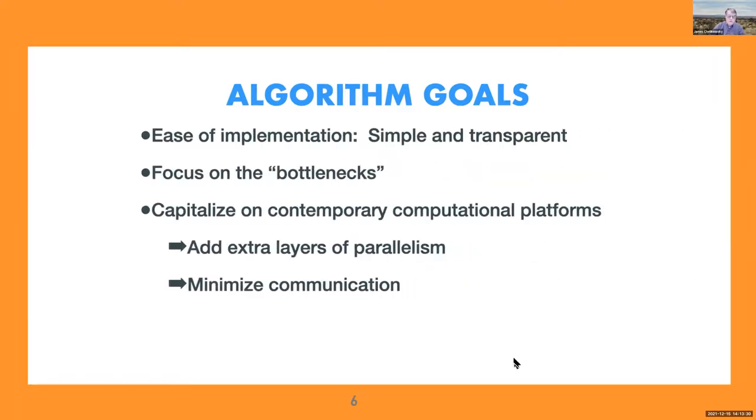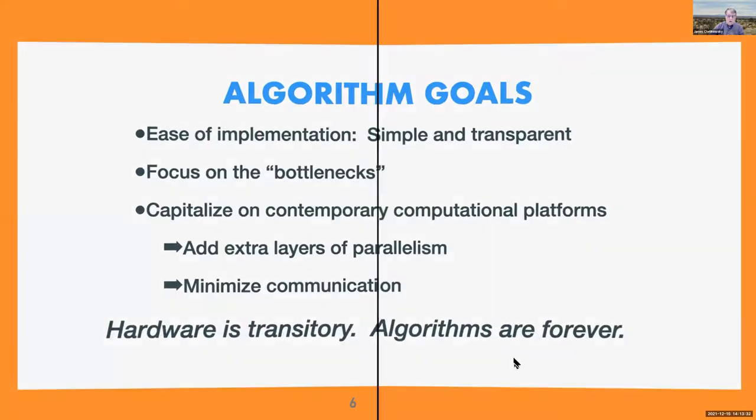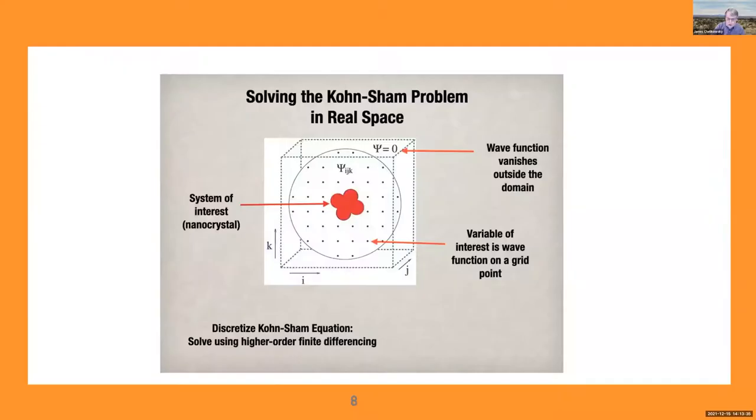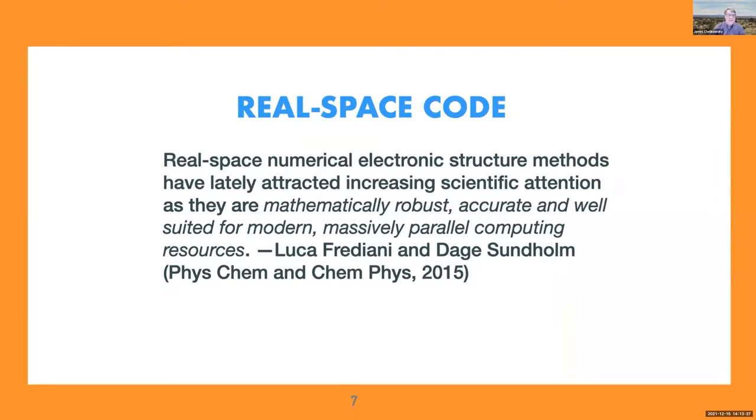And my final thought is that hardware is going to be transitory, but algorithms are forever. Paul Kent in his talk on Monday mentioned this in some sense, that the algorithms really need to be robust. The hardware is going to change, but how we view a solution to this problem, if we have solid algorithms, probably will not change as much. It's always nice to get somebody to say something good about what you're doing. So there was a compendium a few years ago on real space codes, and the authors said that real space numerical electronic structure methods have lately attracted interest because they're mathematically robust, accurate, and well-suited for parallel computing.